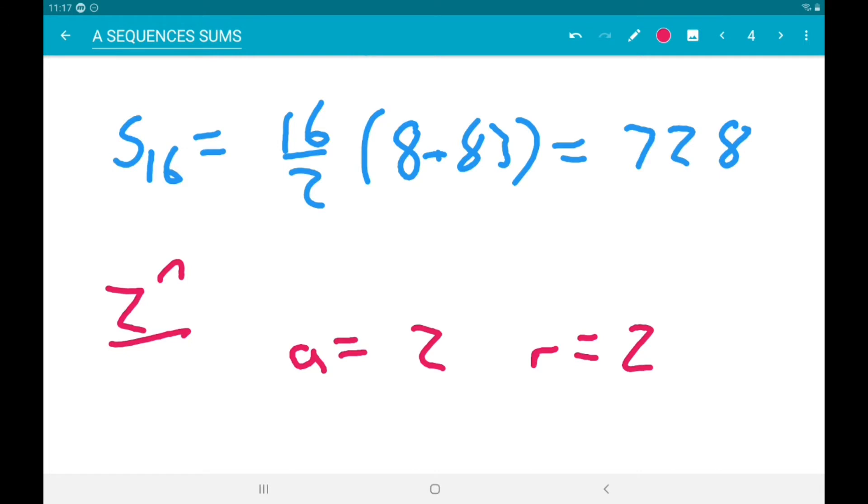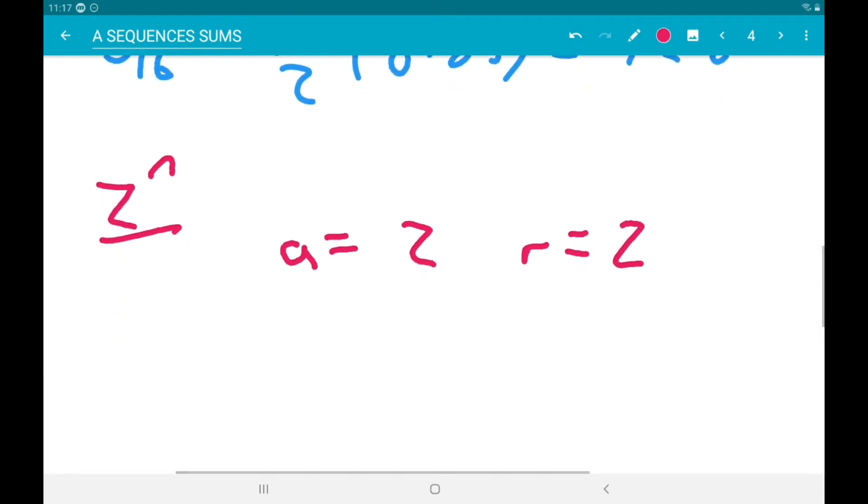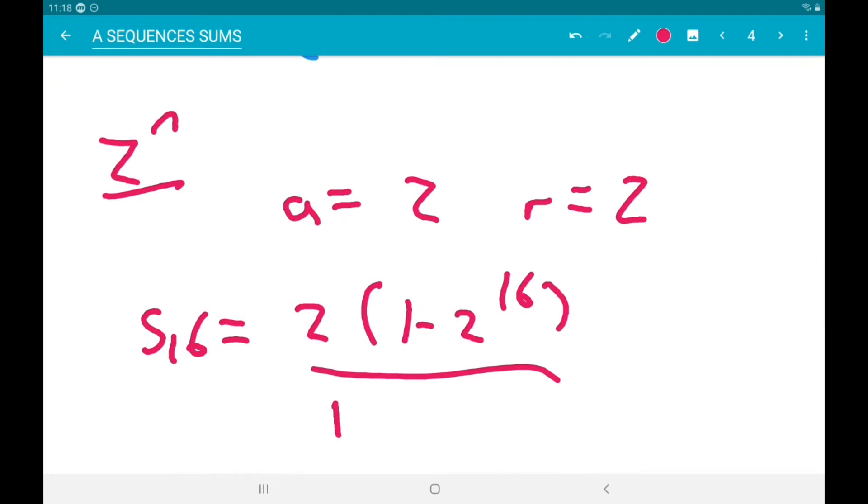Alright, now sum to 16 is then 2 times 1 minus 2 to the 16 over 1 minus 2. Now that gives us 131,070.